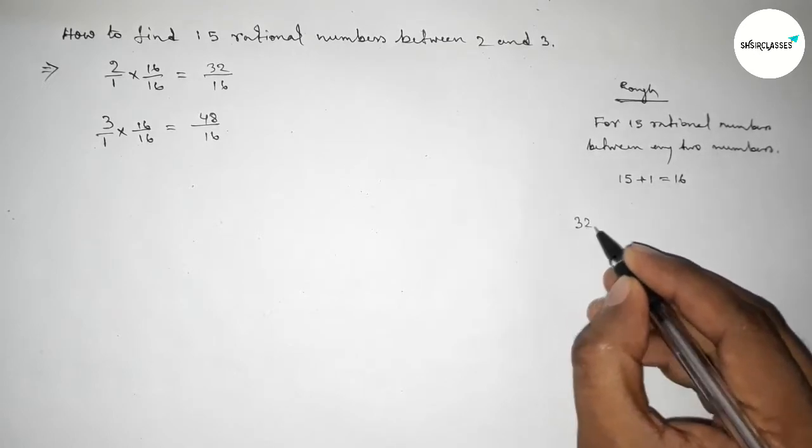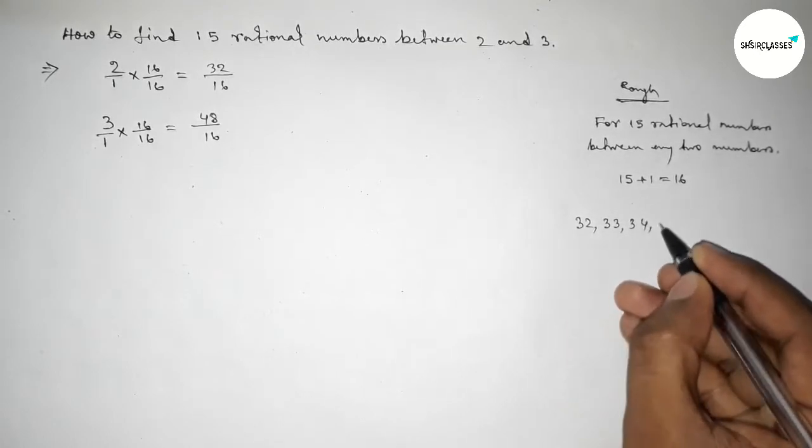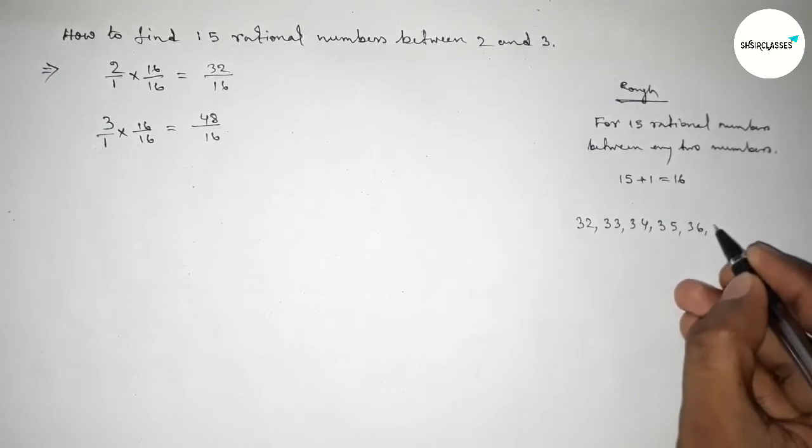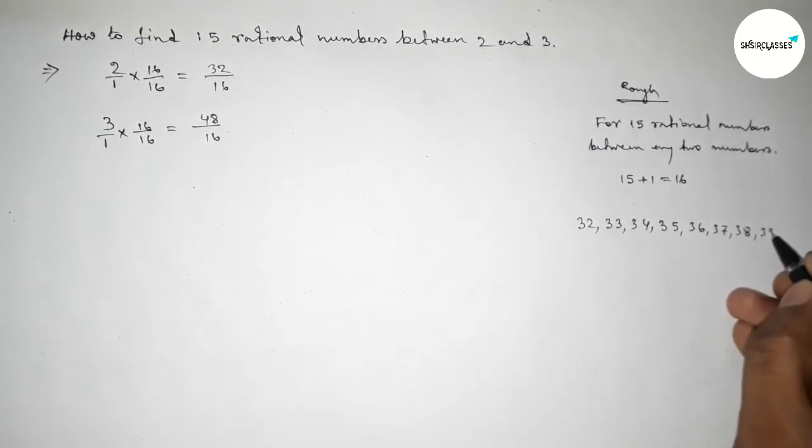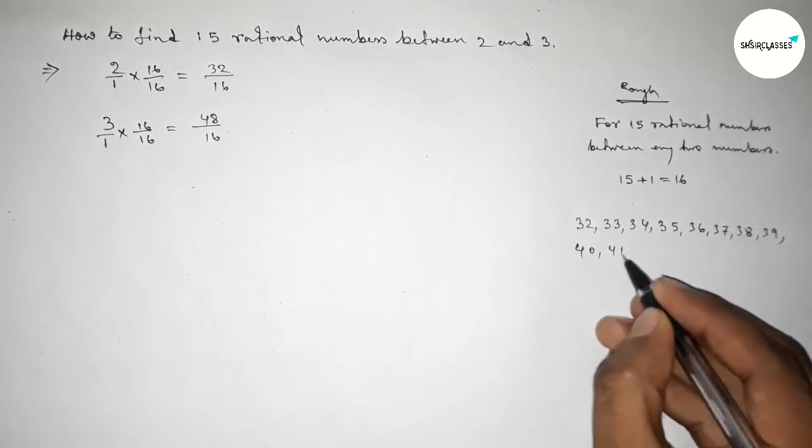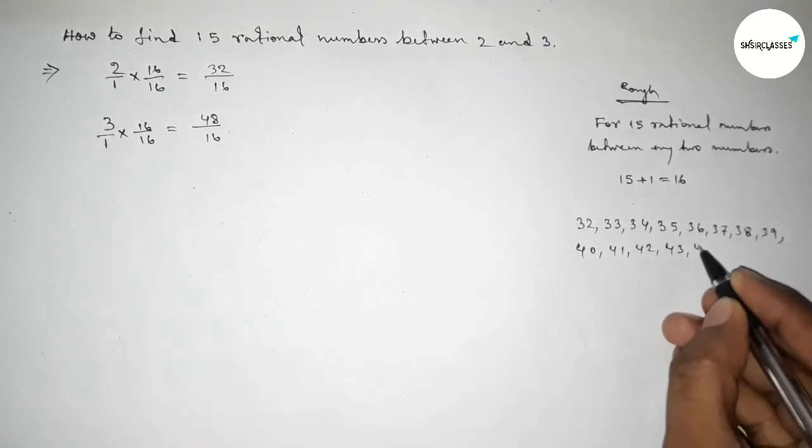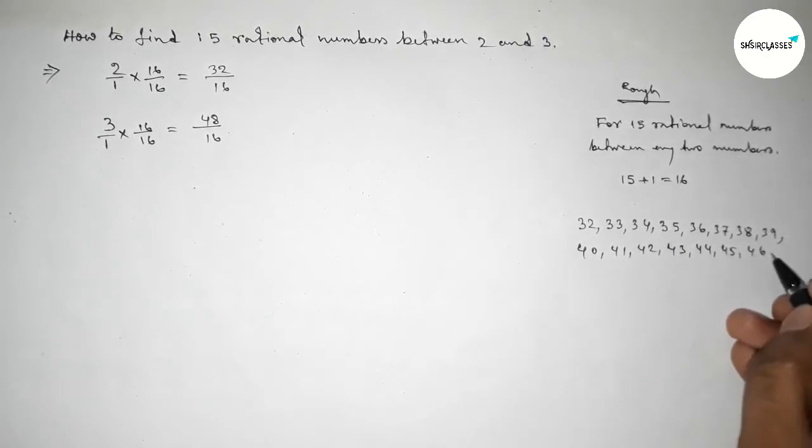Now between 32 to 48 we can get 15 integers. So first write down here all the integers by this way.